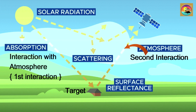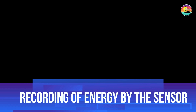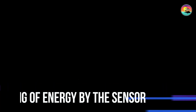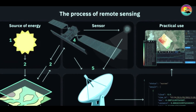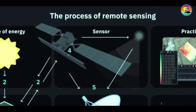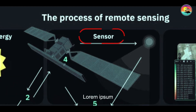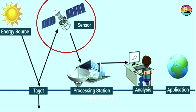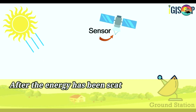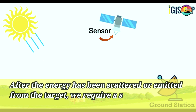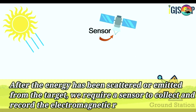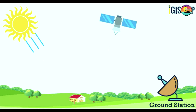Recording of energy by the sensor: after the energy is scattered by or emitted from the target, we require a sensor to collect and record the electromagnetic radiation.